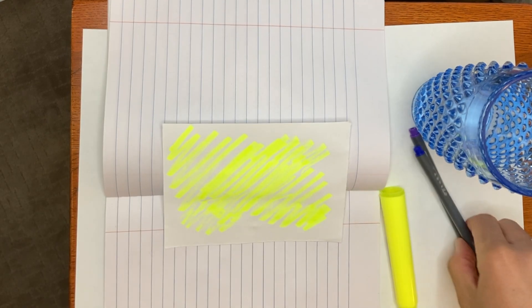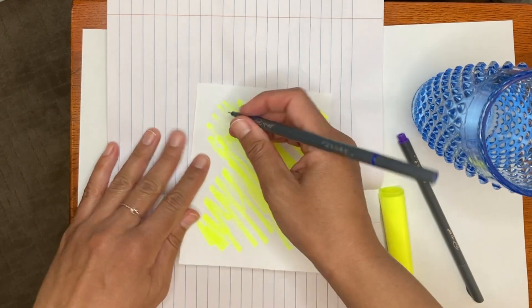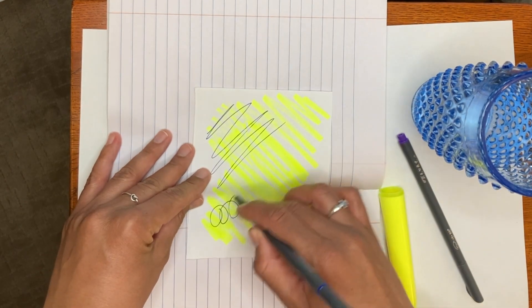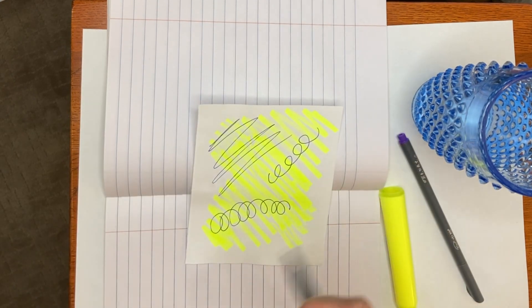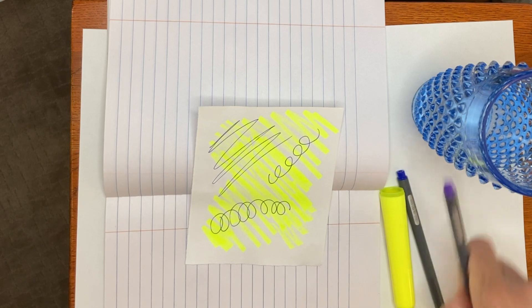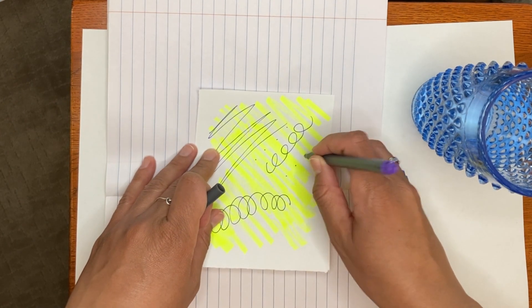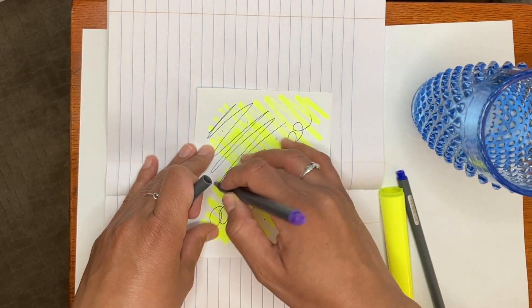Next, pick another color and do some other design. Perhaps you do some squiggly lines a different way. Perhaps they're curly lines. Perhaps you choose a third color and create some dots. There's no wrong way to do this. Anything goes in your watercolor collage.